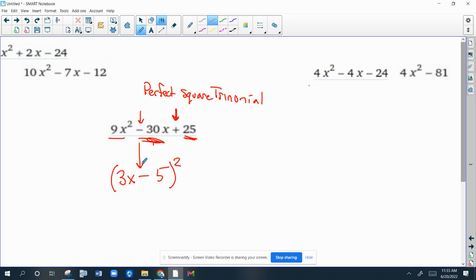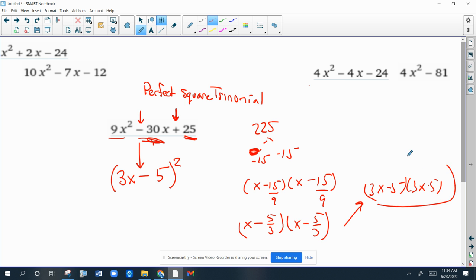Now, you could have done 9 times 25, which I'm going to do right now. It was 225. And then, factors of 225 that add up to negative 30. Let's see. 225. Okay, 15 and 15. So, negative 15 and negative 15. So, you would have x minus 15, x minus 15. Put them over 9. Reduce the fractions. So, this is 3x minus 5 times 3x minus 5. So, obviously, it's the same thing as this. You don't have to realize it's a perfect square trinomial, but if you can, it makes it easier.